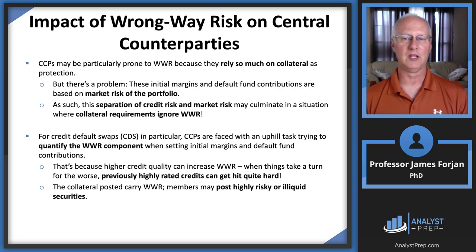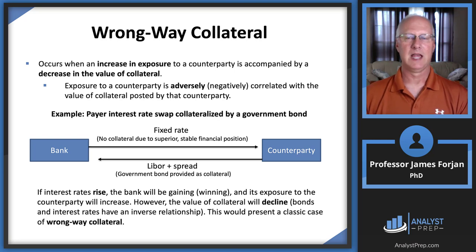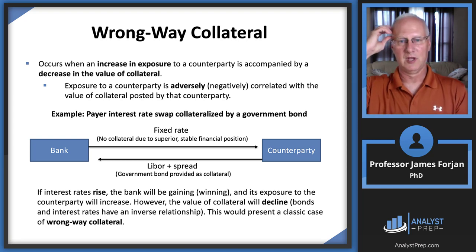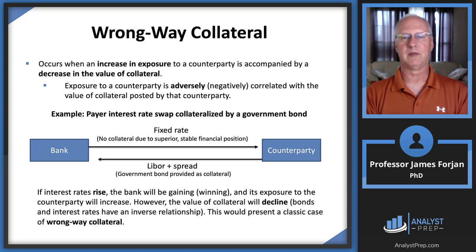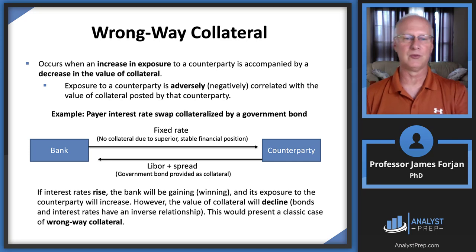Members may post highly risky or illiquid securities as collateral. An example of wrong way collateral: in an interest rate swap where a bank receives floating and the counterparty posts a government bond as collateral, rising interest rates are good for the bank — but they simultaneously reduce the value of the government bond collateral. So the collateral becomes less valuable precisely when it's most needed. That's wrong way collateral.